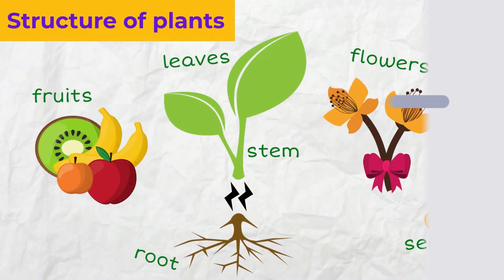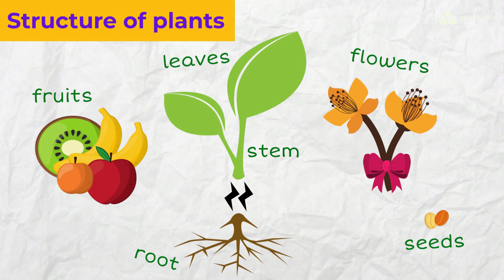What most plants have in common is their structure that usually includes roots, stems, leaves, flowers, fruits and seeds. However, there are seedless and flowerless plants as well.